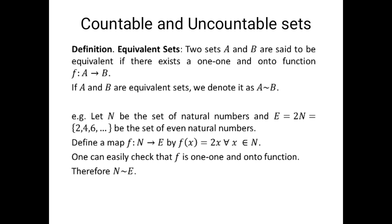Let us first check that the map f is one-to-one. In order to prove that f is one-to-one, we will prove that for any two elements x and y of domain N such that f(x) = f(y), we will get x equal to y. So let x, y belong to N such that f(x) = f(y), which implies 2x = 2y, which gives us x = y. So f is a one-to-one function.